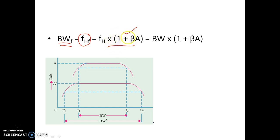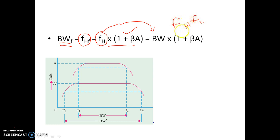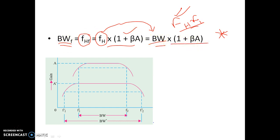The bandwidth without feedback was FH, because bandwidth without feedback was basically FH minus FL, and as FL is much lesser than FH, bandwidth without feedback is approximately equal to FH. So instead of FH, we can put bandwidth without feedback, and we get this very important relationship: bandwidth with application of feedback equals bandwidth without application of feedback, multiplied by (1 + βA).